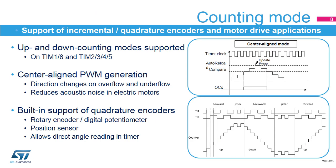Some of the STM32 timers feature up-down counting modes: the advanced control timers 1 and 8, and the general purpose timers 2, 3, 4, and 5. The counting direction can be programmed by software or automatically managed by the timer in center-aligned PWM mode.